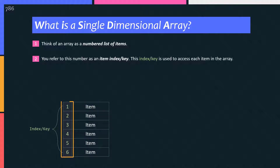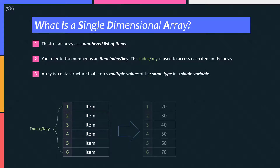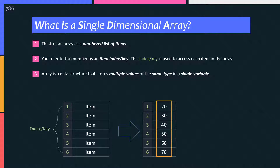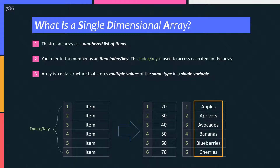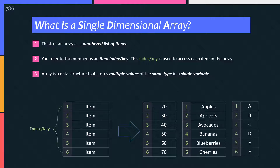Remember this: the index will always be a numeric value, a number. Array stores multiple values of the same type. It stores multiple values of the same type in a single variable — like an array of integer values, string values, etc. A single-dimensional array is also called a one-dimensional or 1D array. It's up to you whatever you name it.